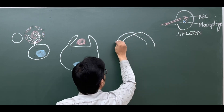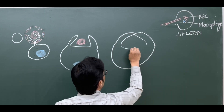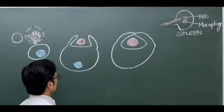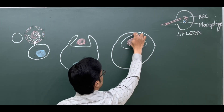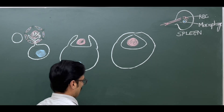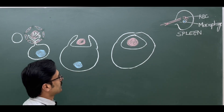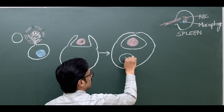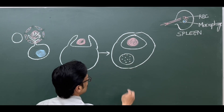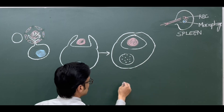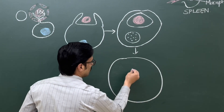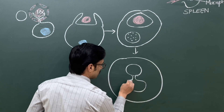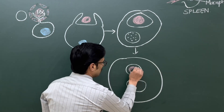The macrophage cell membrane fuses around the red blood cell, and the red blood cell is internalized — now within the macrophage. Within the macrophage there are lysosomes filled with lysosomal enzymes. The next step is fusion between the membrane covering the RBC and the lysosomal membrane.